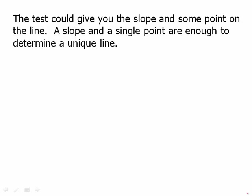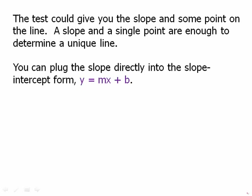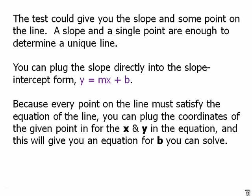The test could give you the slope and then some point on the line. The slope and a single point are enough to determine a unique line. You can plug the slope directly into slope-intercept form y = mx + b — we would know m but initially not know b. Because every point on the line must satisfy the equation, you can plug in the coordinates of the given point for x and y, solve for b, and then you have the full slope-intercept form.